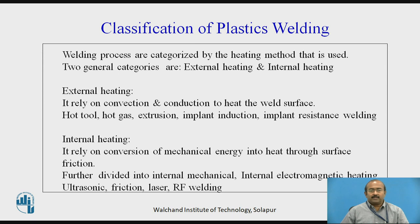Let us look at the classification of plastic welding. Welding processes are categorized by the heating method used. Two general categories exist: external heating and internal heating. External heating relies on convection and conduction to heat the weld surfaces — for example, hot tool, hot gas, extrusion, implant induction, implant resistance welding. Internal heating relies on conversion of mechanical energy into heat through surface friction, further divided into internal mechanical and internal electromagnetic heating — for example, ultrasonic, friction, and laser welding.